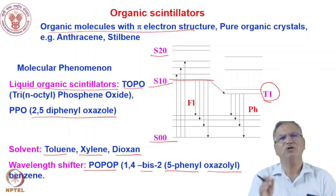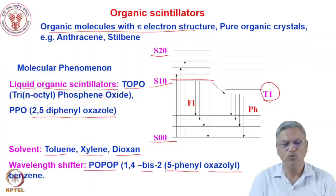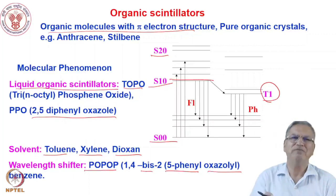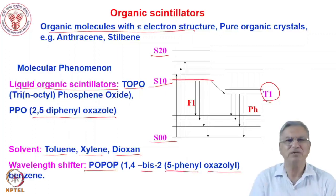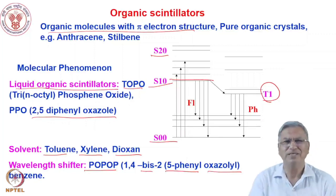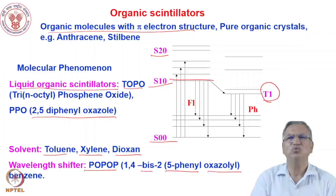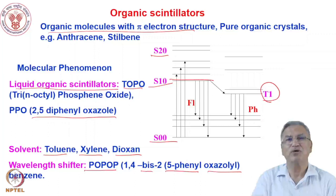These organic molecules are very good for detecting alpha and beta particles at low energy, but they have a low photo-fraction because they are mostly hydrocarbon material — carbon, hydrogen, oxygen. The photoelectric effect, which requires high-Z material, is very small. So there are some applications where they are useful, but particularly for gamma counting, they are not very useful.